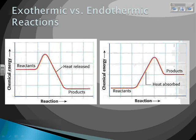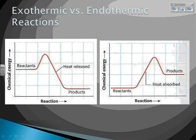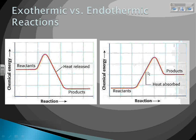Here are two graphs. The x-axis is labeled as 'reaction' — we could change that to time — and the y-axis in both graphs is labeled as chemical energy. Which one represents an exothermic reaction and which one represents an endothermic reaction? For the second graph, looking at reactants and products, products end up with more energy — that's an endothermic reaction, heat absorbed.